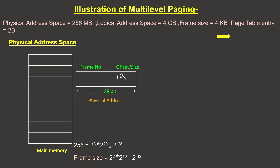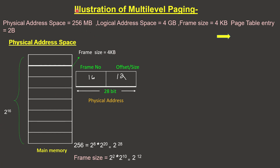The remaining bits are 28 minus 12 equals 16 bits, which represent the frame number. So main memory has 2 to the power 16 frames. The total size is verified as 2 to the power 16 frames multiplied by 4 KB equals 256 MB.